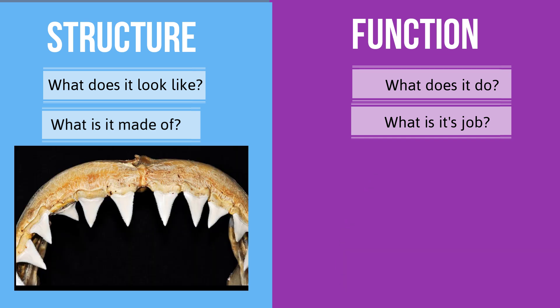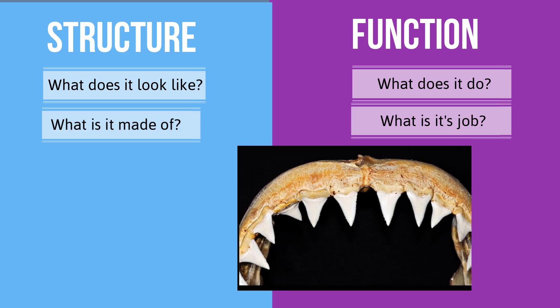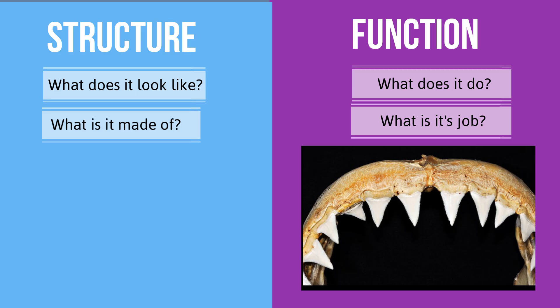This last picture is a picture of shark teeth. Their structure is triangular in shape. They are found in rows composed of calcium phosphate. They have sharp edges. Their function is to help sharks cut and rip up their food.